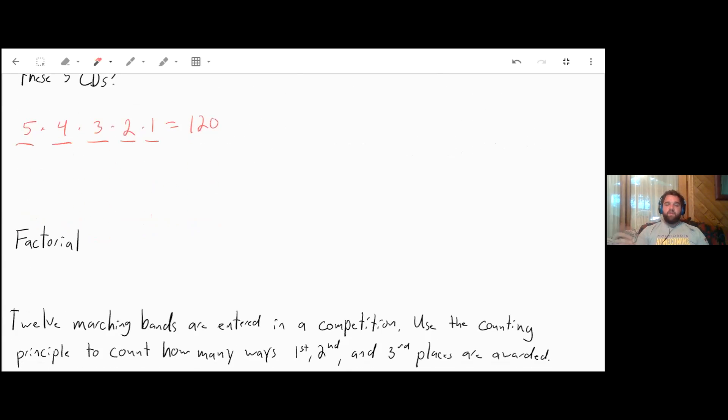Now I want to talk about something called the factorial. The factorial, let's just say five factorial, means we're multiplying five by every consecutive number less than that until we get down to one. So five factorial is the same as five times four times three times two times one, which is exactly what we just did on our last problem. So we can actually say that five factorial is equal to 120.